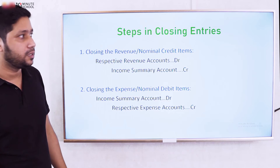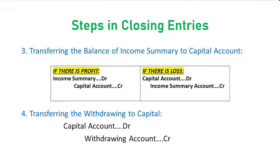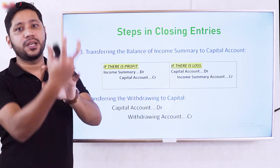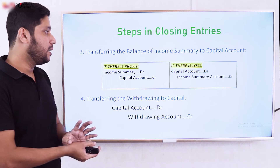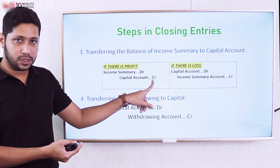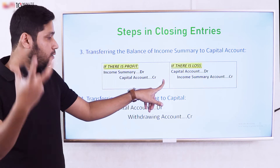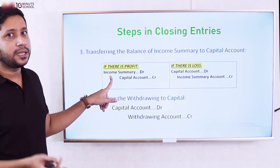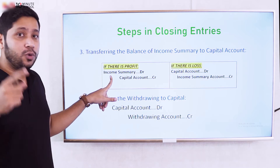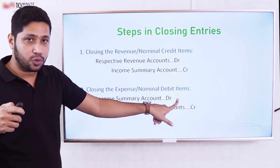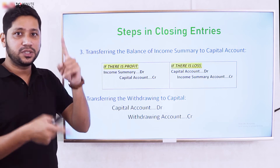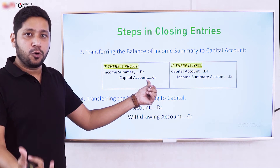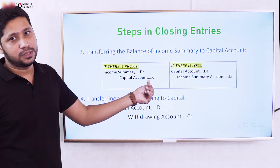The income summary now has a net balance. If revenue was $100,000 and expenses were $70,000, the income summary has a credit balance of $30,000, which represents net profit. If the income summary has a debit balance, that means there is a net loss.